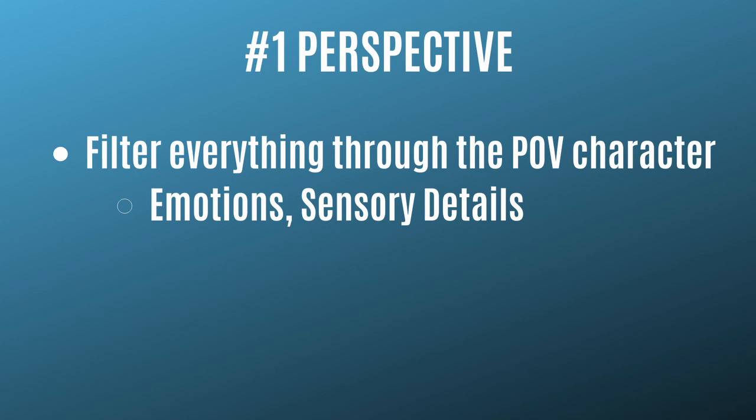We get to experience the emotions that the character feels as they are feeling them. There's emotional intensity and emotional range, meaning that in one minute we may be feeling bummed out along with the character, while in the next we may be feeling angry or excited or whatever it may be. We're also filtering sensory details through the POV character.